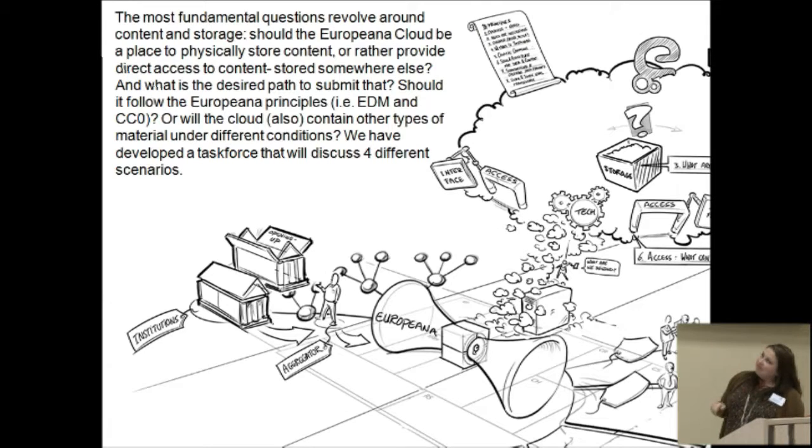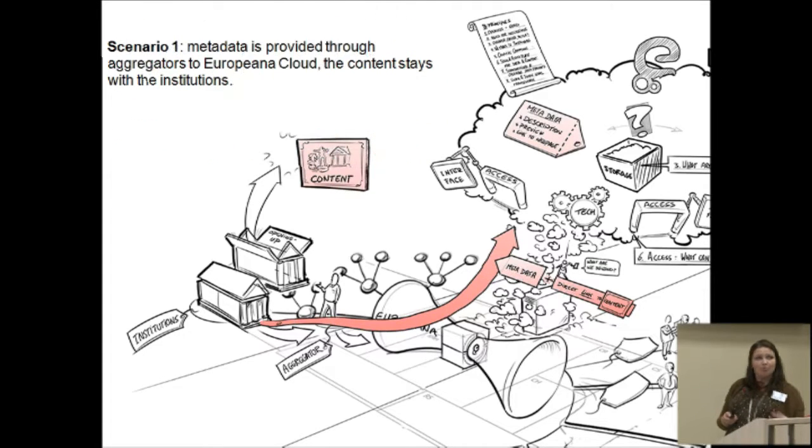So, these are the issues that I have just described, the storage issues, the platform issues, the framework issues. Then we have the question, the final question that is our burning question at the moment, which is, well, we've got this cloud infrastructure, where does Europeana fit in this? So, we have four scenarios that we need to work through. This is the first one. This one says that metadata is provided through Europeana as it normally is. Content stays with the institutions. Secondly, metadata through Europeana, content stored with an aggregator.